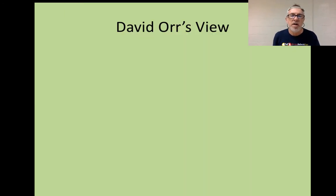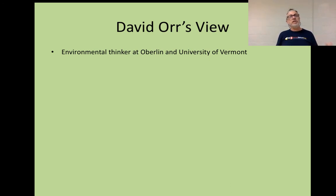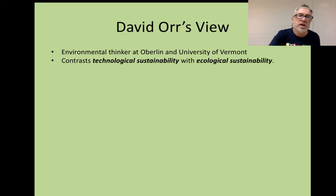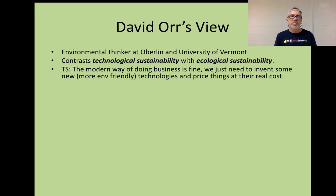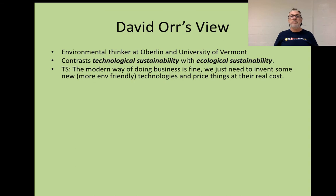Here is a graphic about sustainable development that includes environmentally sound decisions, socially equitable decisions, and economically viable decisions — and the economically viable dimension is important as well. I want to introduce another environmentalist: David Orr, an environmental thinker and professor at Oberlin and now the University of Vermont. He looked at environmental problems and distinguished between technological sustainability and ecological sustainability, arguing they are fundamentally different and we need to be clear about these differences.